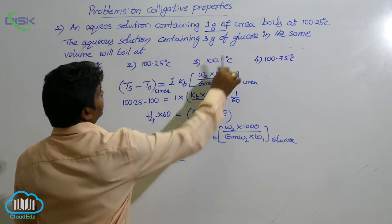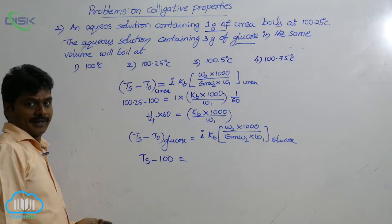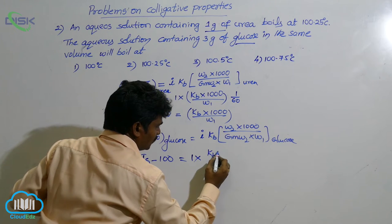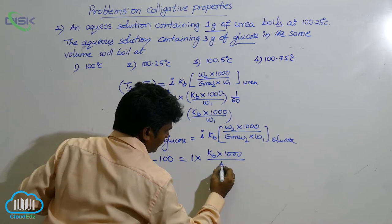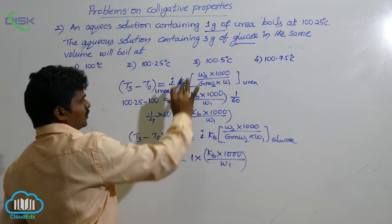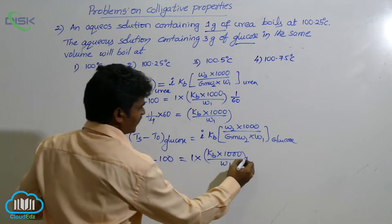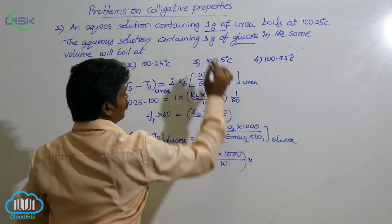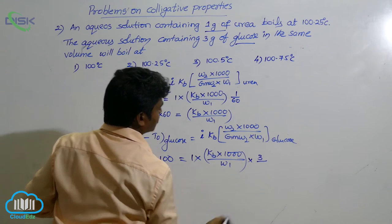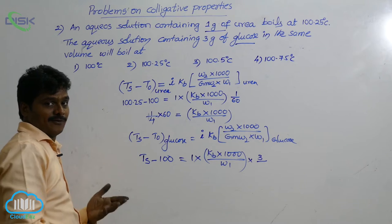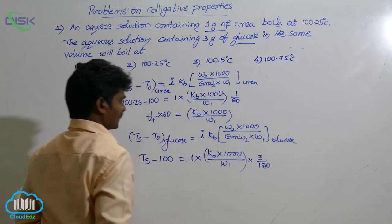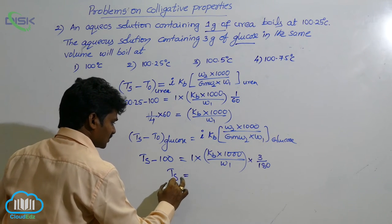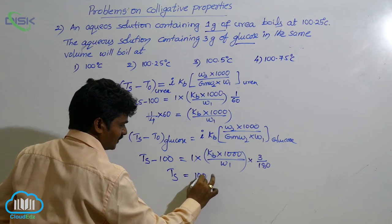That side, Van't Hoff factor for glucose - glucose is a non-electrolyte, so 1 into KB. KB into 1000 by W1, it is fixed in both the solutions, its value is constant. Into what is the remaining terms? W2, weight of glucose, 3 grams by its molecular weight. What is molecular weight of glucose? 180. Now substitute its value. Now Ts equals to minus 100 if goes that side, plus 100, so 100 plus.